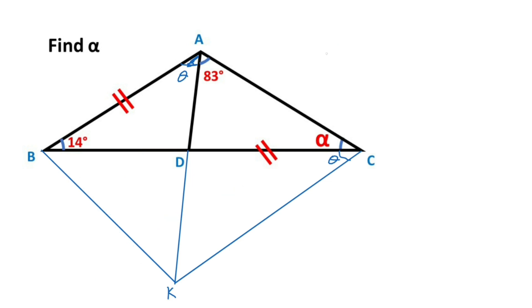That means B, A, C, K is a cyclic quadrilateral. Notice that if here this angle is 83 degrees, that means here this angle must be equal 83 degrees. Because of cyclic quadrilateral.